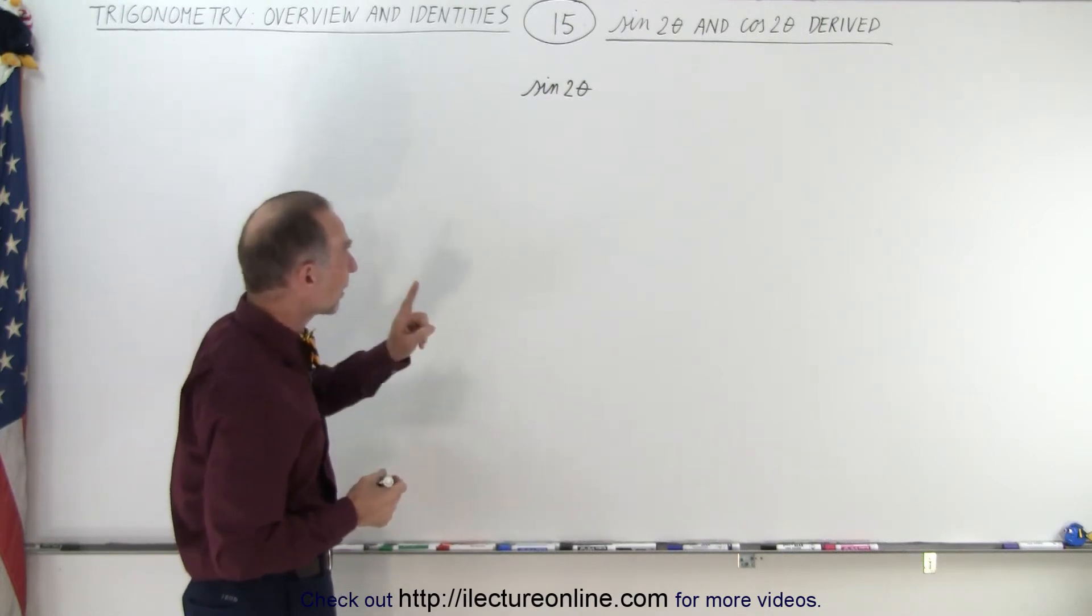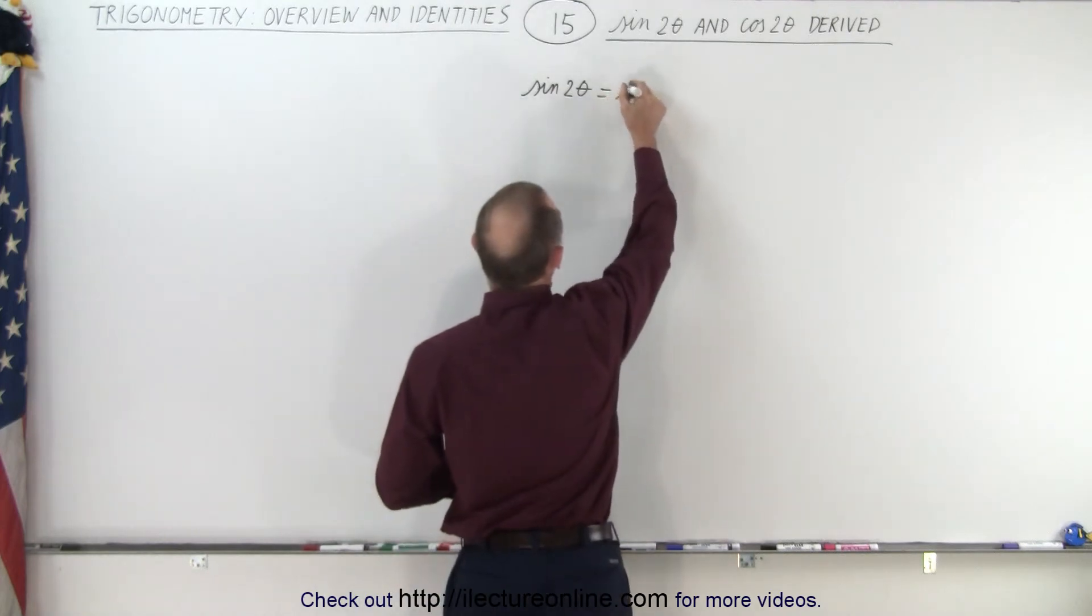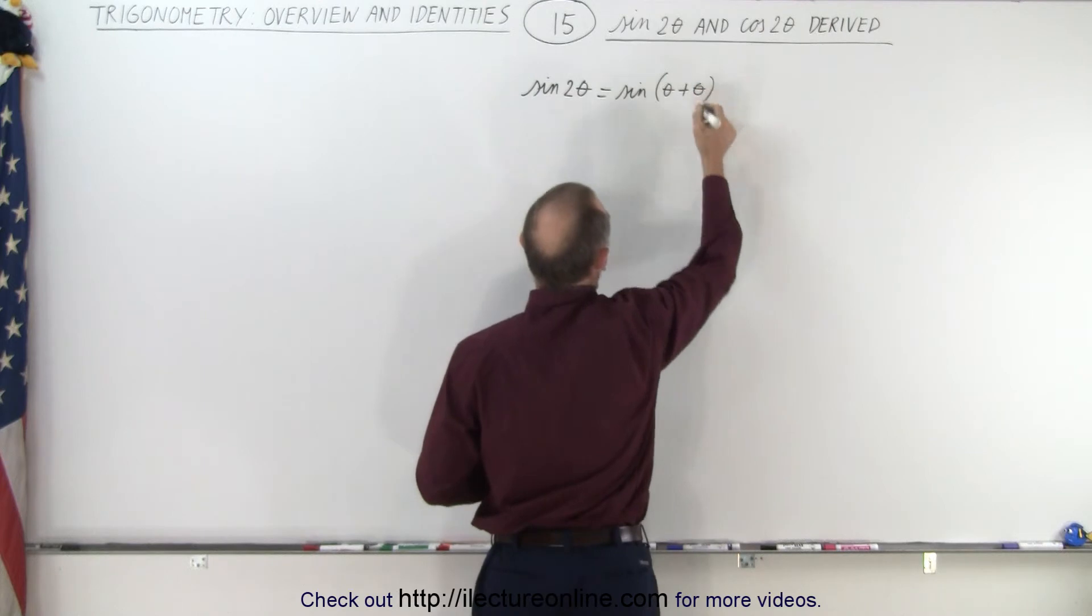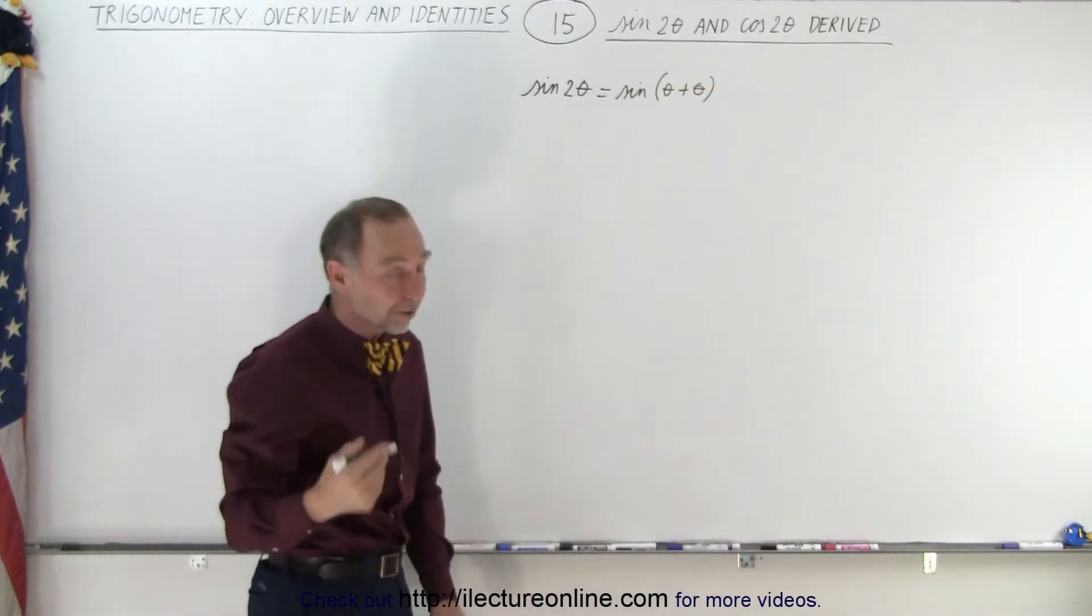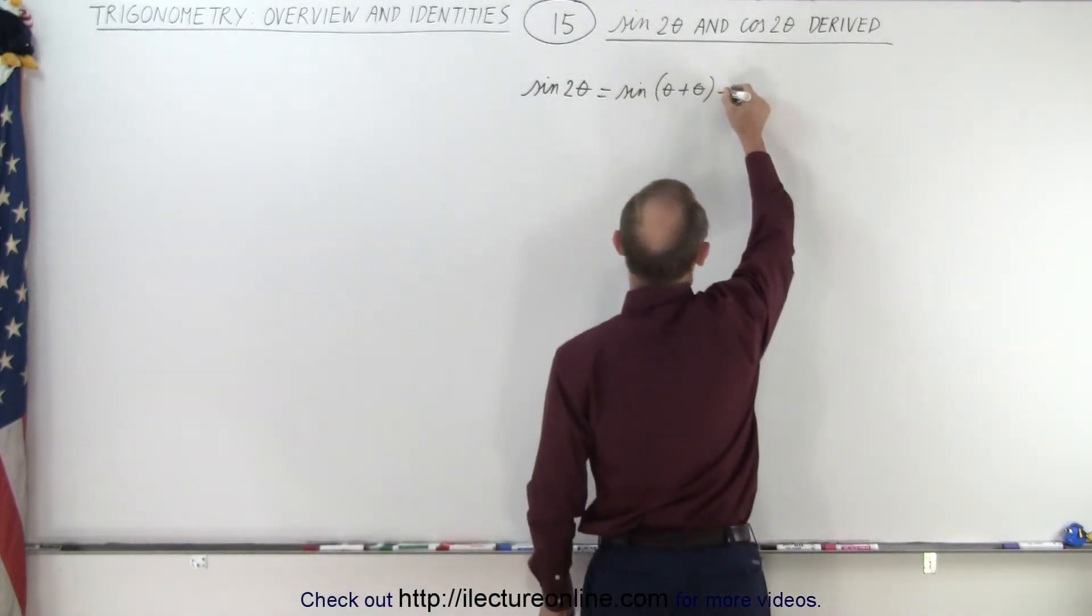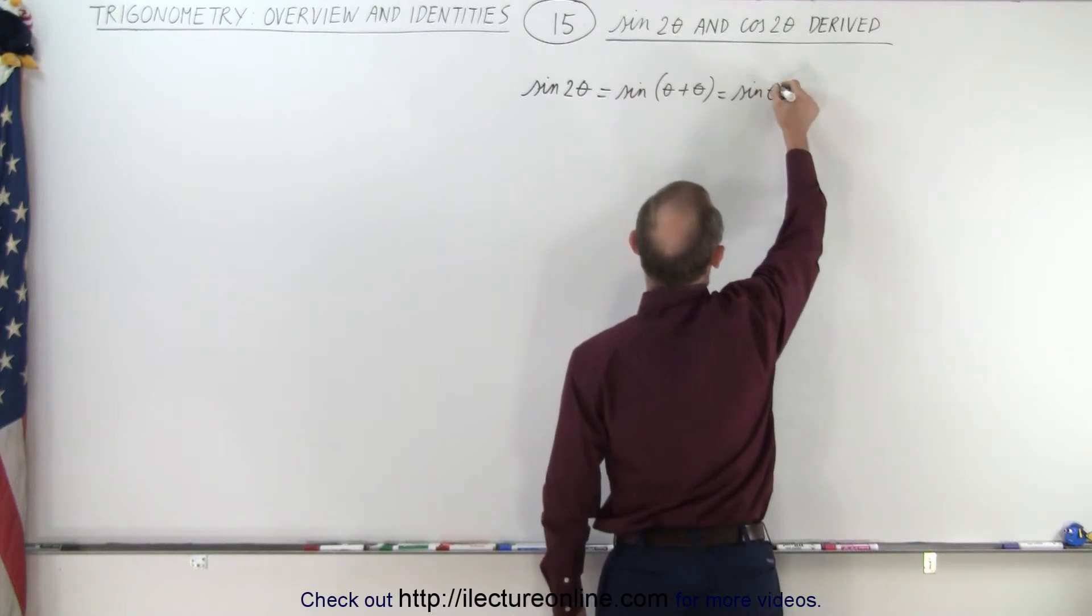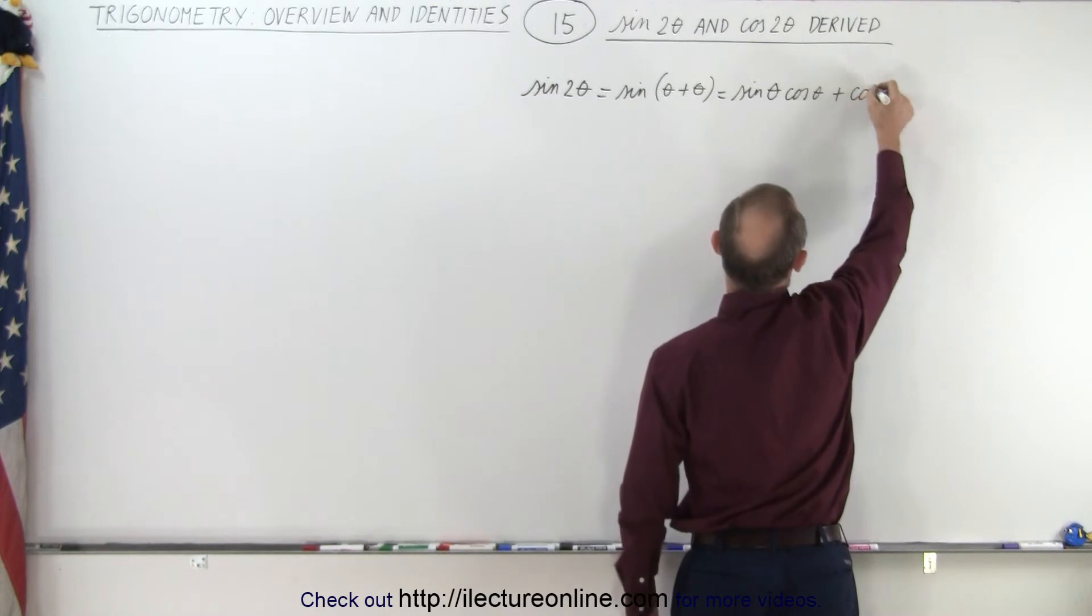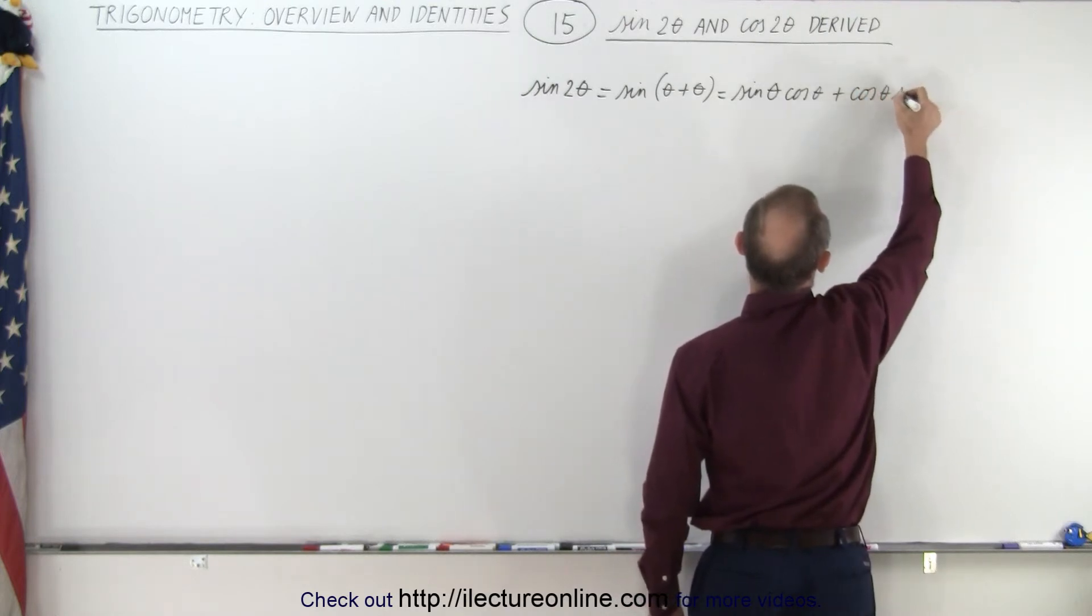First, when we have the sine of twice the angle, we can rewrite this as the sine of the sum of two angles. Once you have it written as a sum, you can write it as sine of theta times cosine of theta plus cosine of theta times sine of theta.